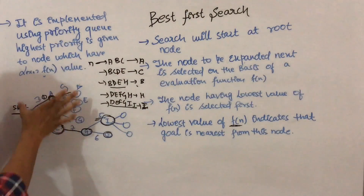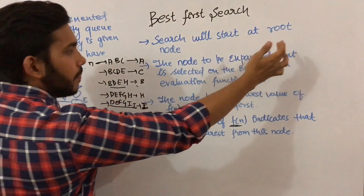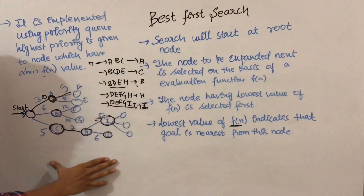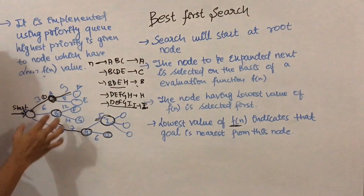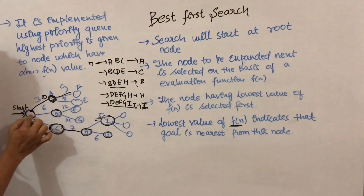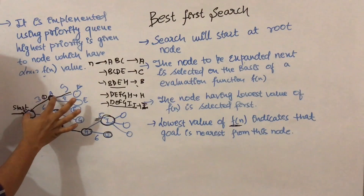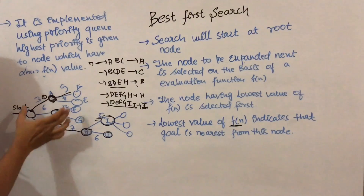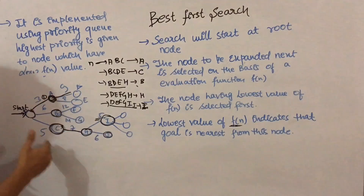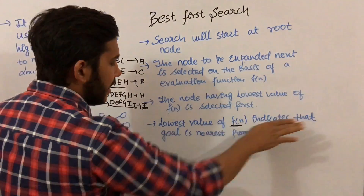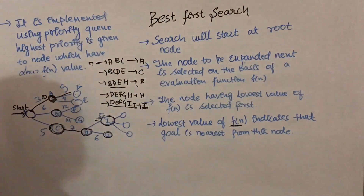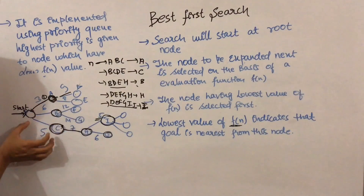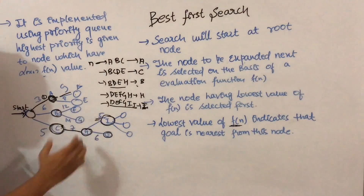Searching starts from the root node. The node to be expanded next is selected on the basis of an evaluation function f(n). At each stage, f(n) estimates the cost of the path — for example, this path has cost 3, this path has cost 6, this path has cost 5. The lowest value of f(n) indicates that the goal node is near.